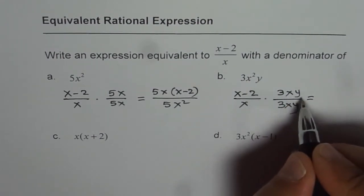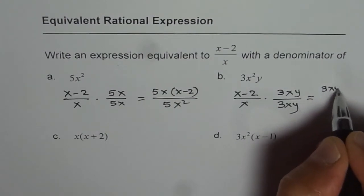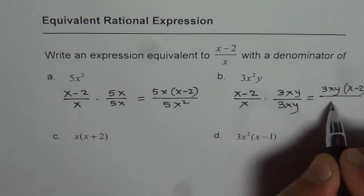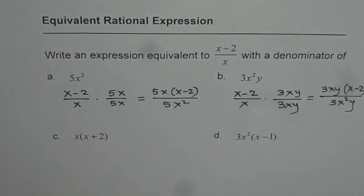So what do we get after multiplying? We get 3xy times x minus 2 divided by 3x squared y. So that is how these questions should be done.